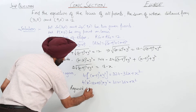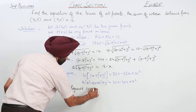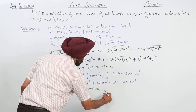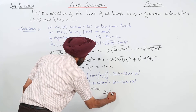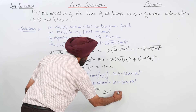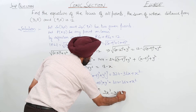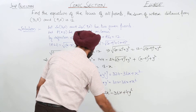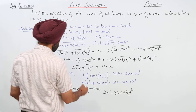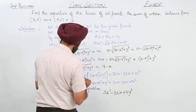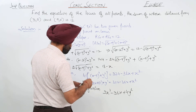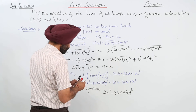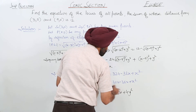The required equation is 3x square minus 36x plus 4y square.